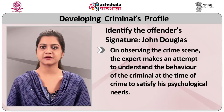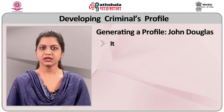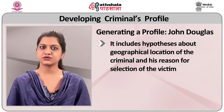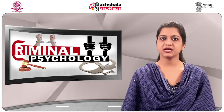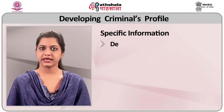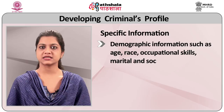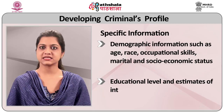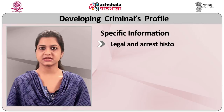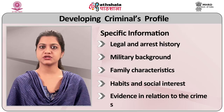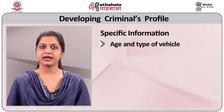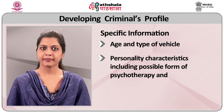Next: Generating Profile — it includes hypotheses about the geographical location of the criminal and his reason for the selection of the victim, the criminal's physical characteristics, behavioral habits and abnormal behavior at the time of committing crime. The profile generated gives specific information about the criminal such as: (a) demographic information — age, race, occupational skills, marital status and socio-economic status; (b) educational level and estimates of intellectual functioning; (c) legal and arrest history; (d) military background; (e) family characteristics; (f) habits and social interests; (g) evidence in relation to the crime scene; (h) age and type of vehicle; (i) personality characteristics including possible form of psychotherapy and suggested interview techniques.